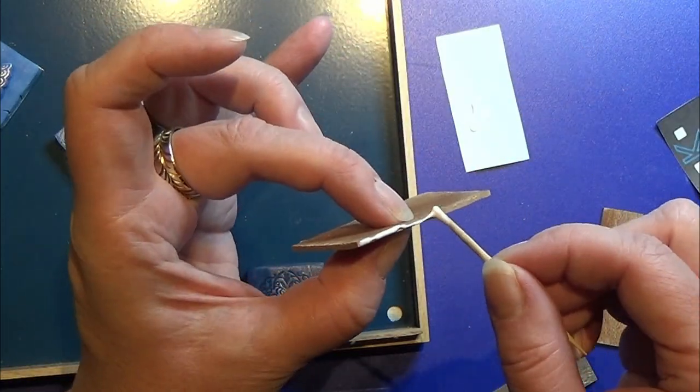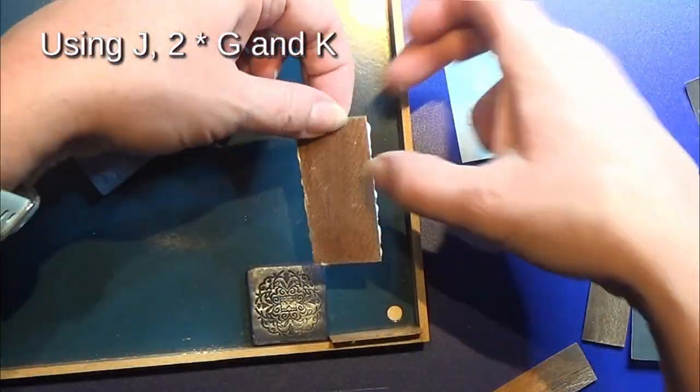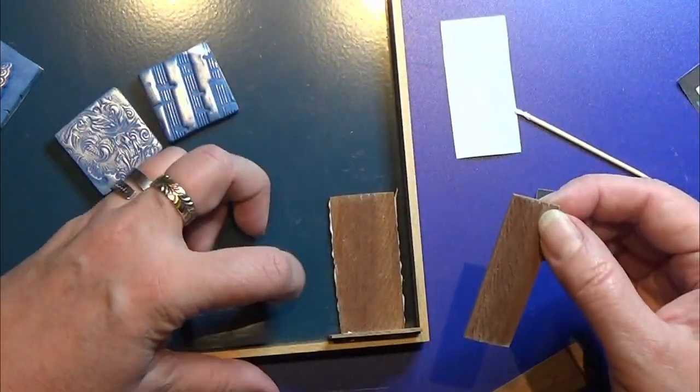Then I took the J, two Gs, and the K piece, and I'm going to glue these together to the middle box of the clock.